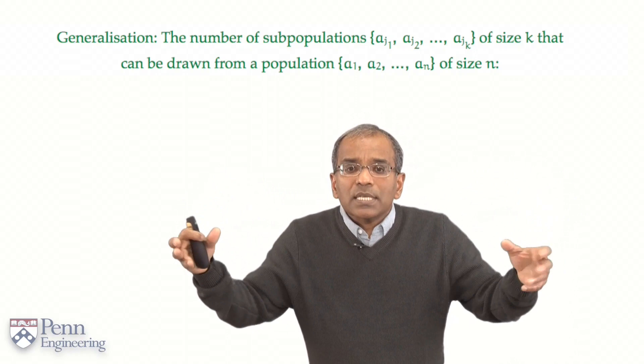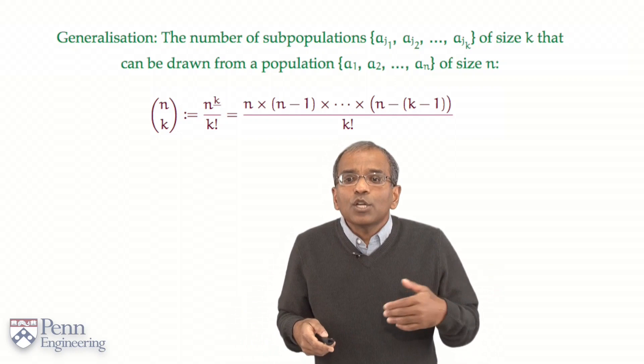How do we do this? Well, exactly the same way we did this before. Specify all ordered sequences, samples of size k without replacement. That is going to give us n to the k falling.